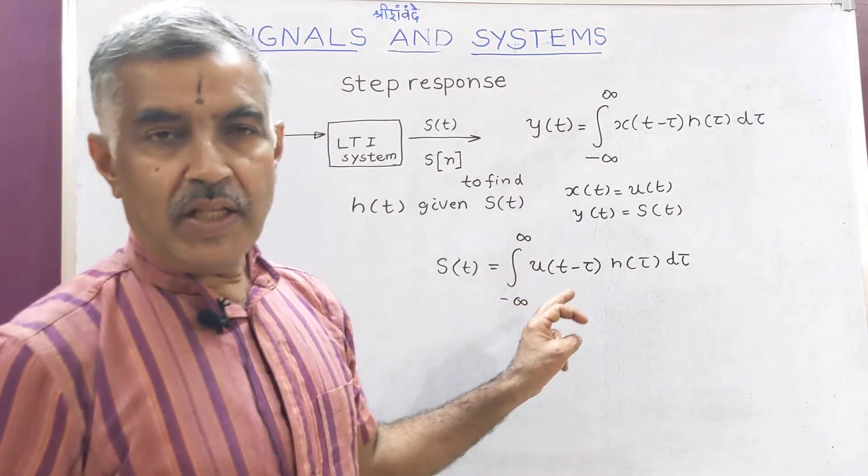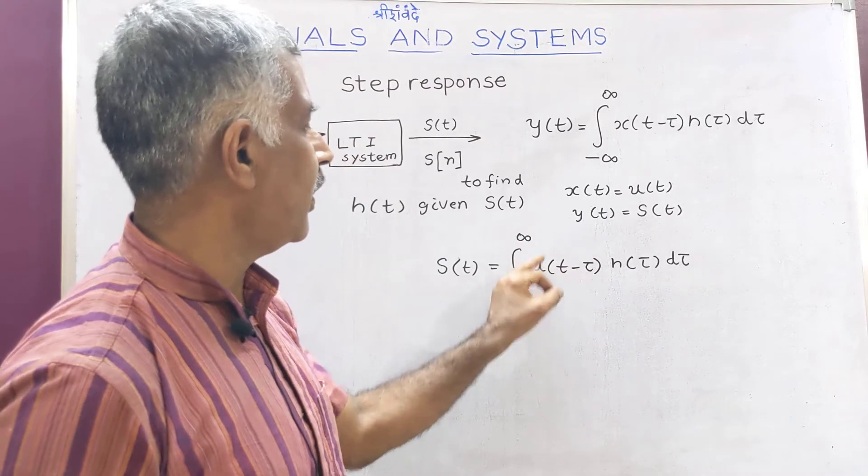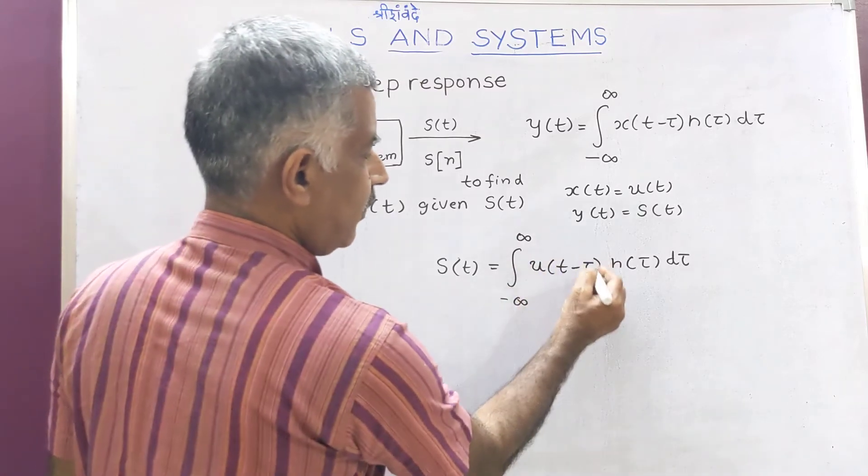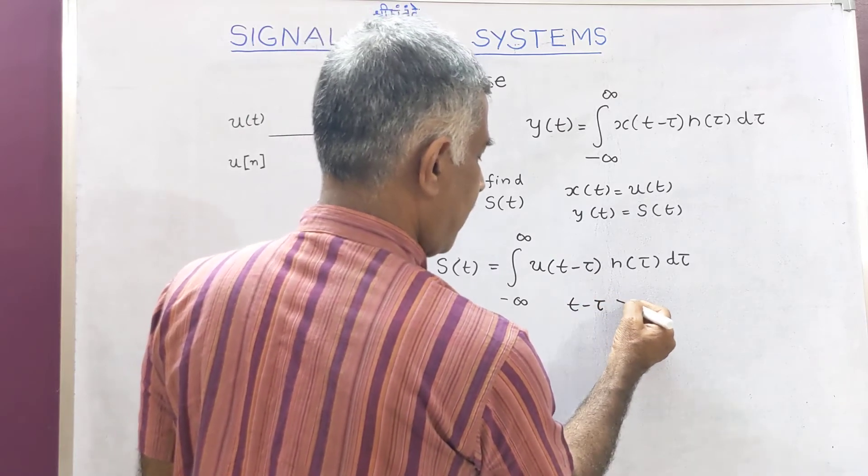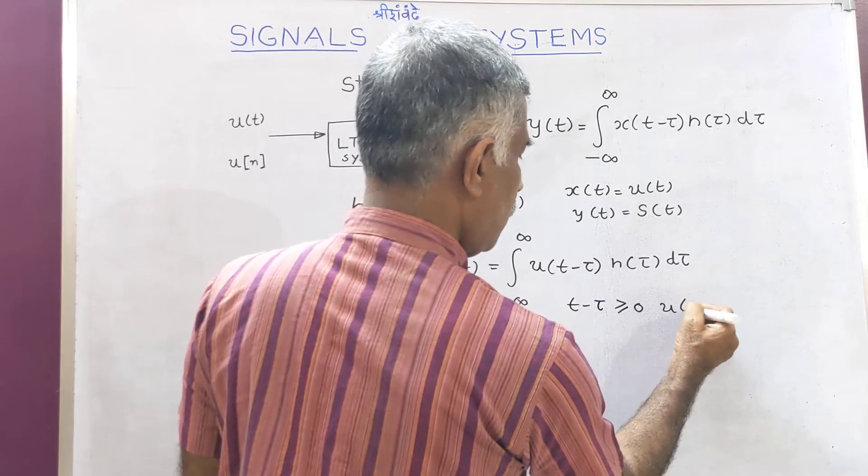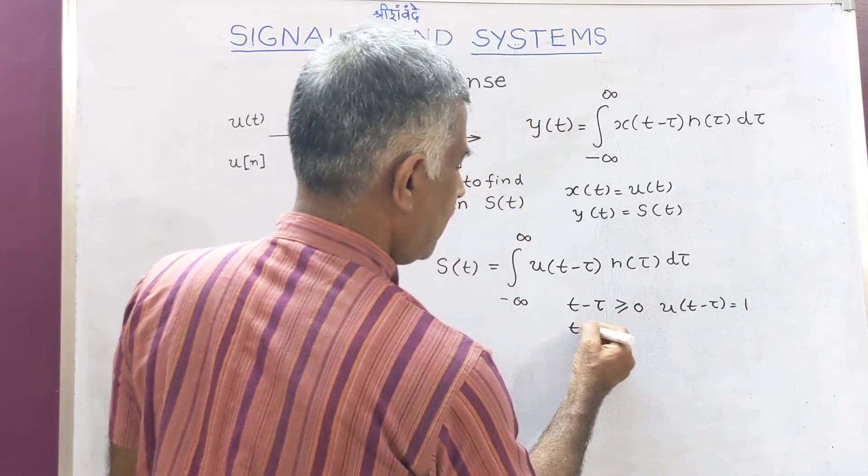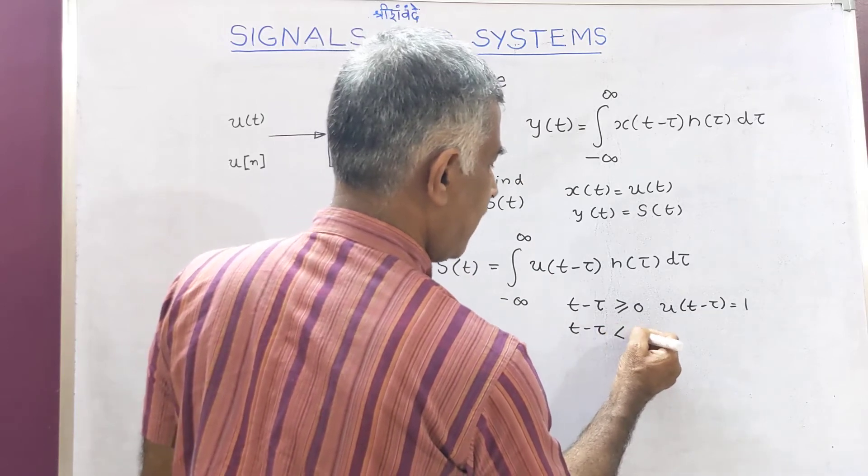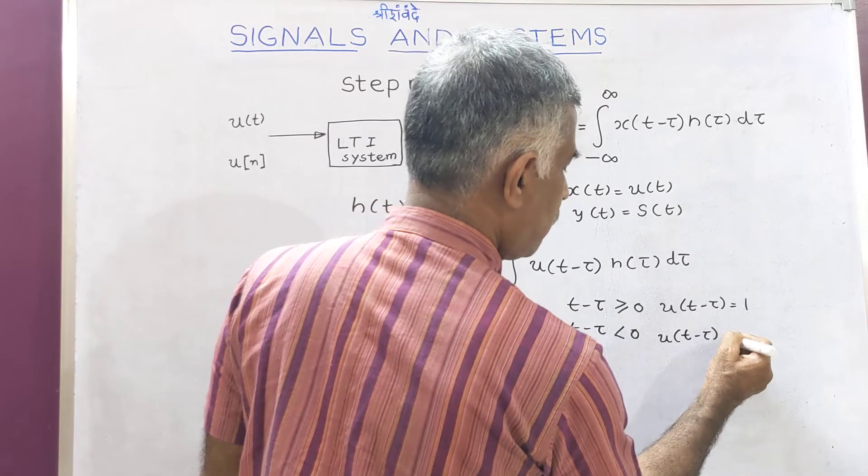In my earlier classes I have interpreted this. The argument T minus tau: when T minus tau is greater than or equal to zero, then U of T minus tau equals one. When T minus tau is less than zero, U of T minus tau equals zero.